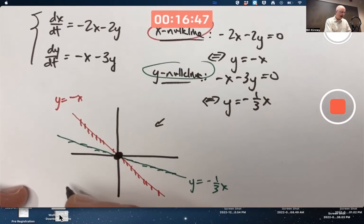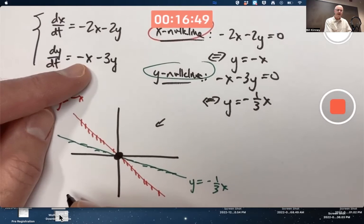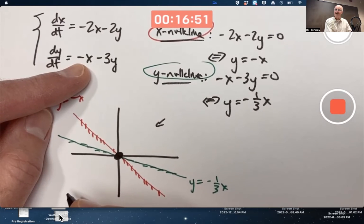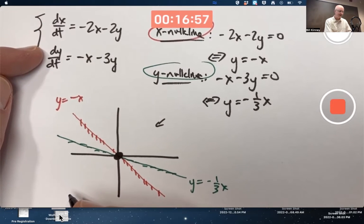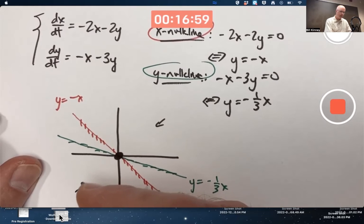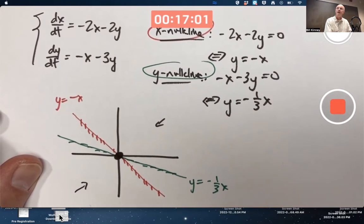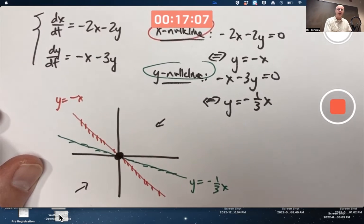Not necessarily in that exact direction, just generally speaking to the southwest. Down here where x and y are both negative, I plug them into the vector field. Negative times a negative is positive. dx/dt and dy/dt for solution curves is going to be positive. x and y are both going to increase. Solutions are going to go to the northeast. Again, not necessarily this exact direction, but just generally to the northeast.